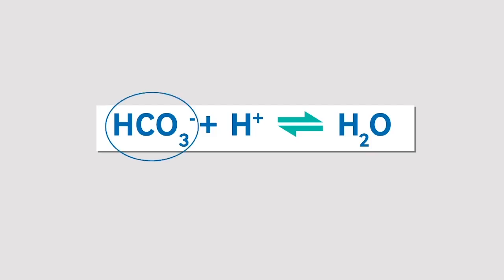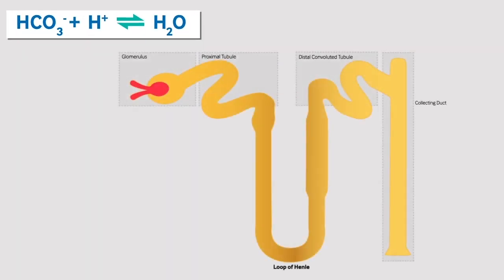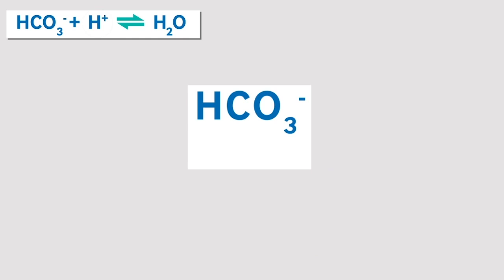Bicarbonate ions are the main metabolic component to buffer acids within the blood. They neutralise acid by reacting with hydrogen ions to form water. The majority of bicarbonate homeostasis is achieved through the kidneys. They can regulate the reabsorption of bicarbonate ions, predominantly in the proximal tubule, as well as forming bicarbonate ions through the excretion of ammonia and monophosphate ions. They are also able to increase hydrogen ion excretion and therefore increase blood pH. The bicarbonate ion is therefore a marker of metabolic homeostasis, kept between 22 and 28 millimoles per litre.